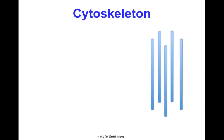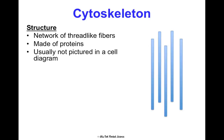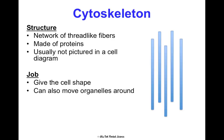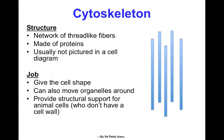The cytoskeleton is a structure you won't usually see in cell diagrams — it's a network of thread-like protein fibers that gives the cell its shape. It's typically left out of pictures because it's embedded throughout and would make diagrams very complicated. It can help move organelles around, and it's especially important for providing structural support in animal cells, which don't have a cell wall like plant cells and prokaryotic cells do.